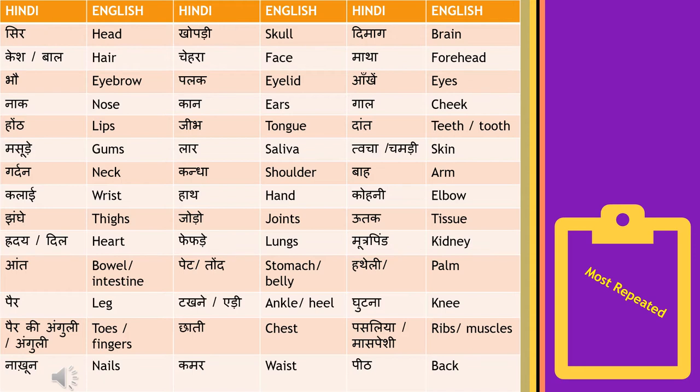'Utak' means tissue. 'Ridhai' ya 'dil' means heart. 'Fefde' means lungs.